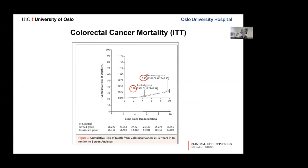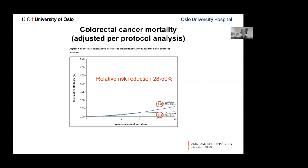Regarding mortality: in the intention-to-treat analysis, there was no difference between the two groups — relative risk of 0.9, not statistically significant. In the per-protocol analysis, using two different methods to control for confounding variables, the estimated risk reduction for mortality was between 28% and 50%.